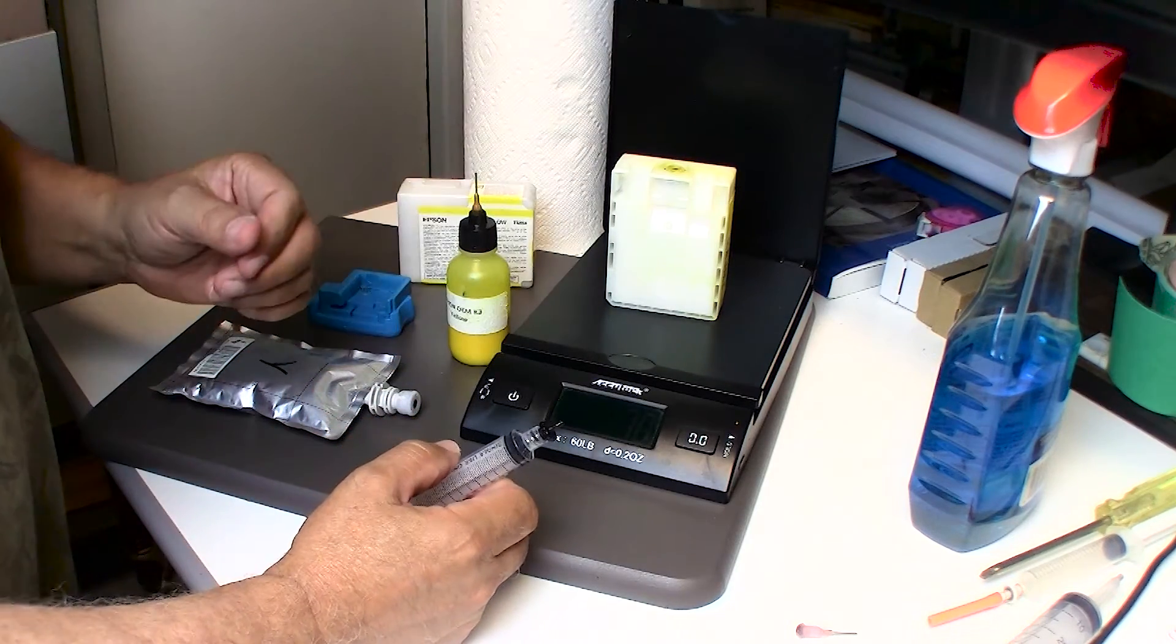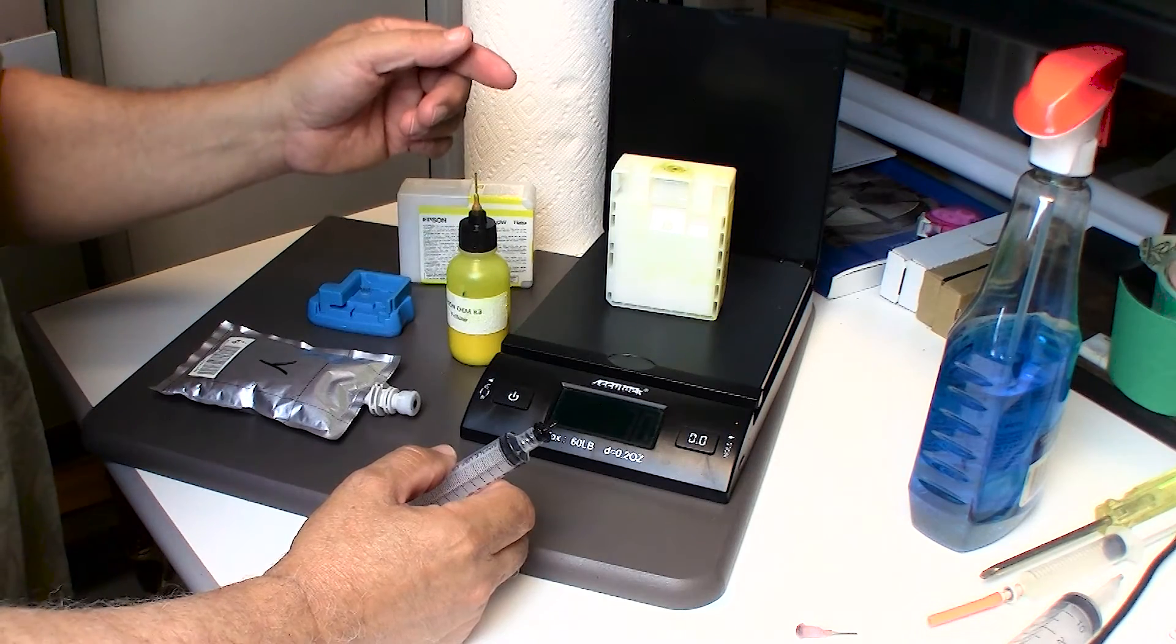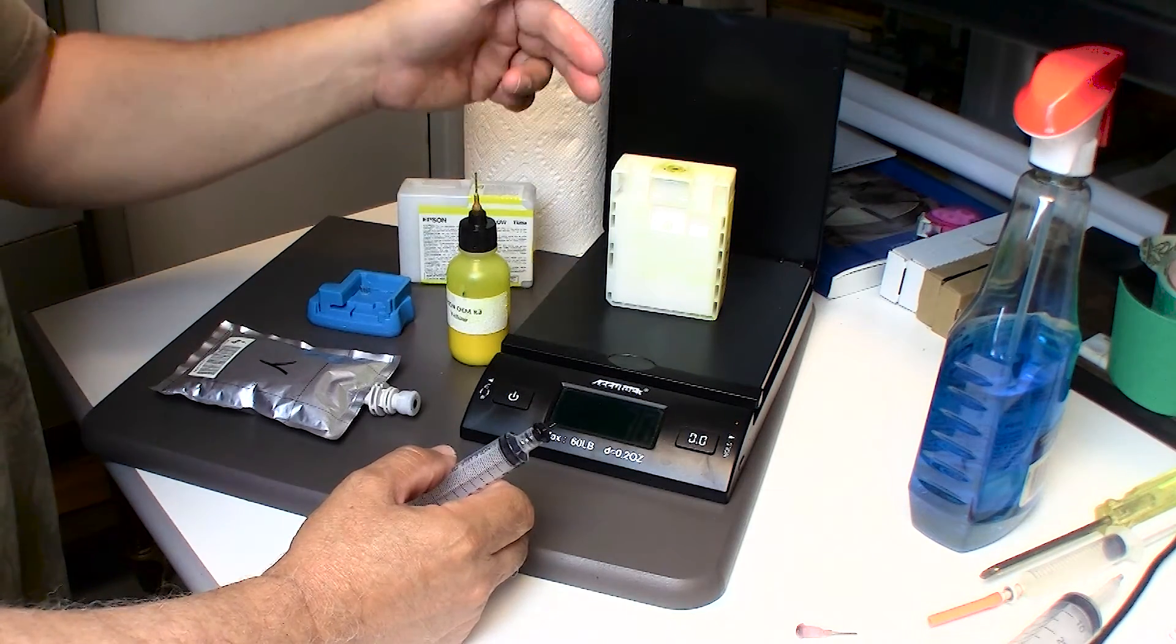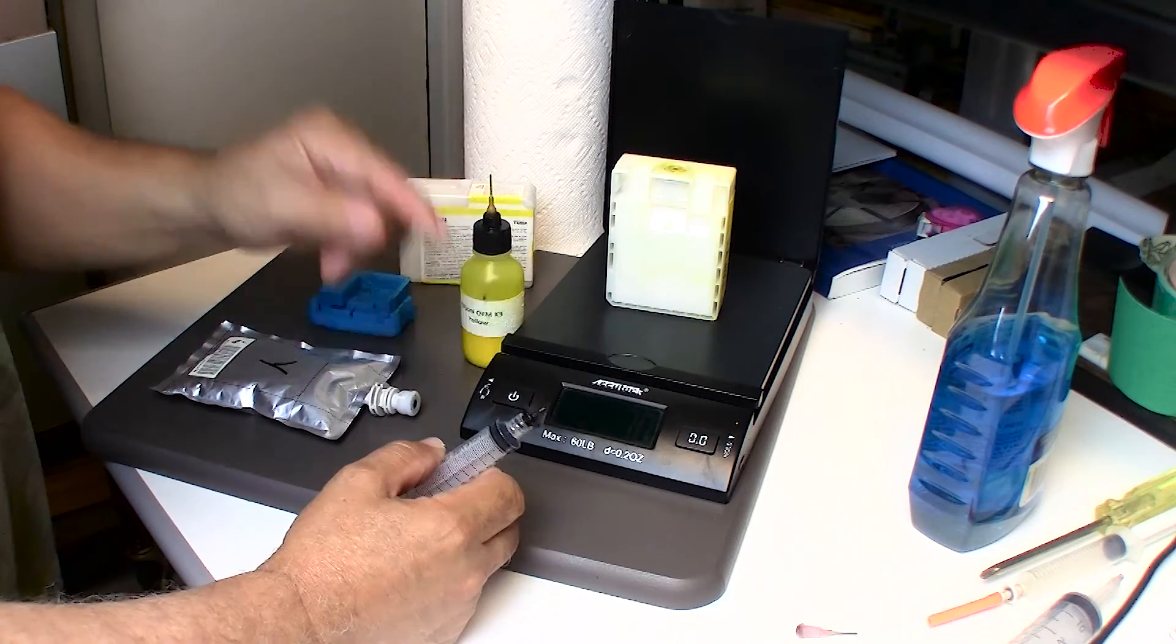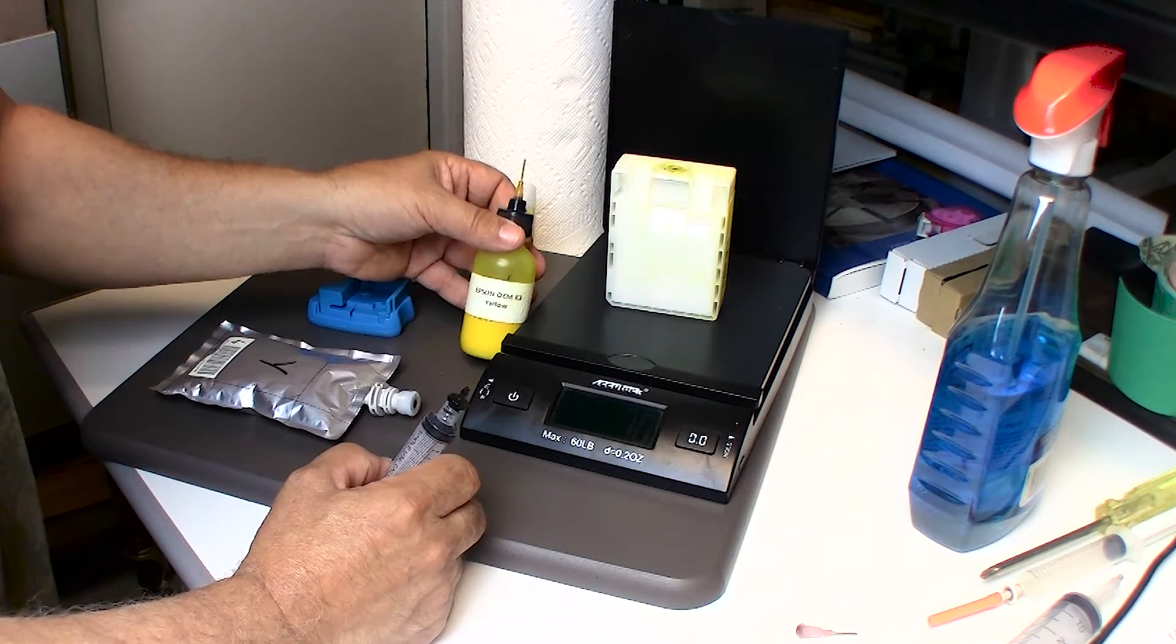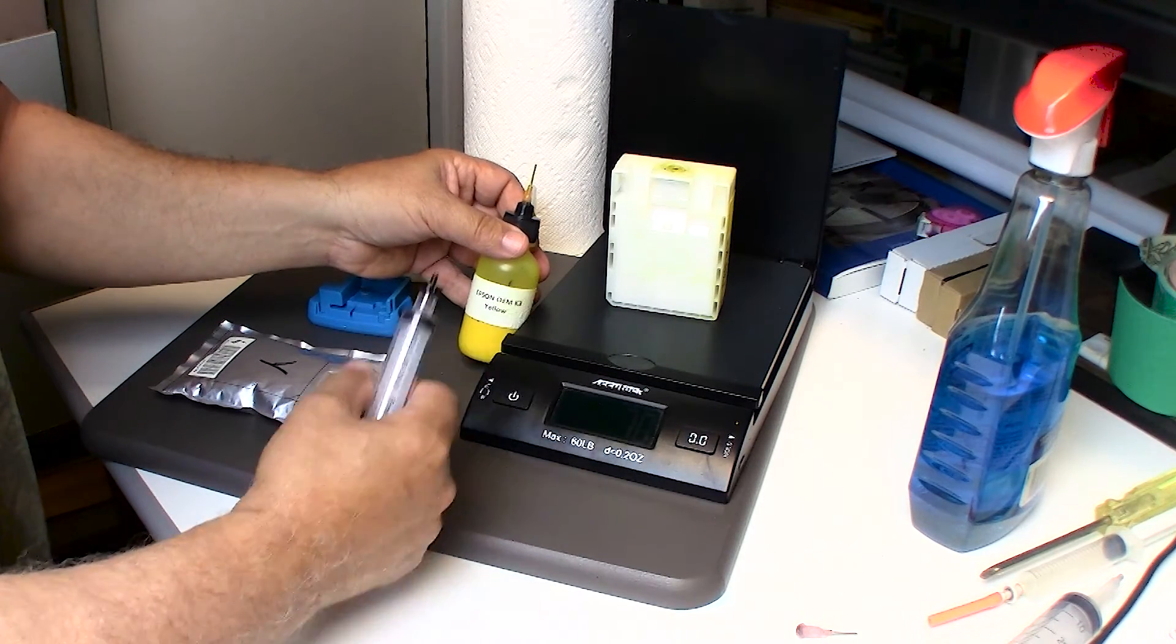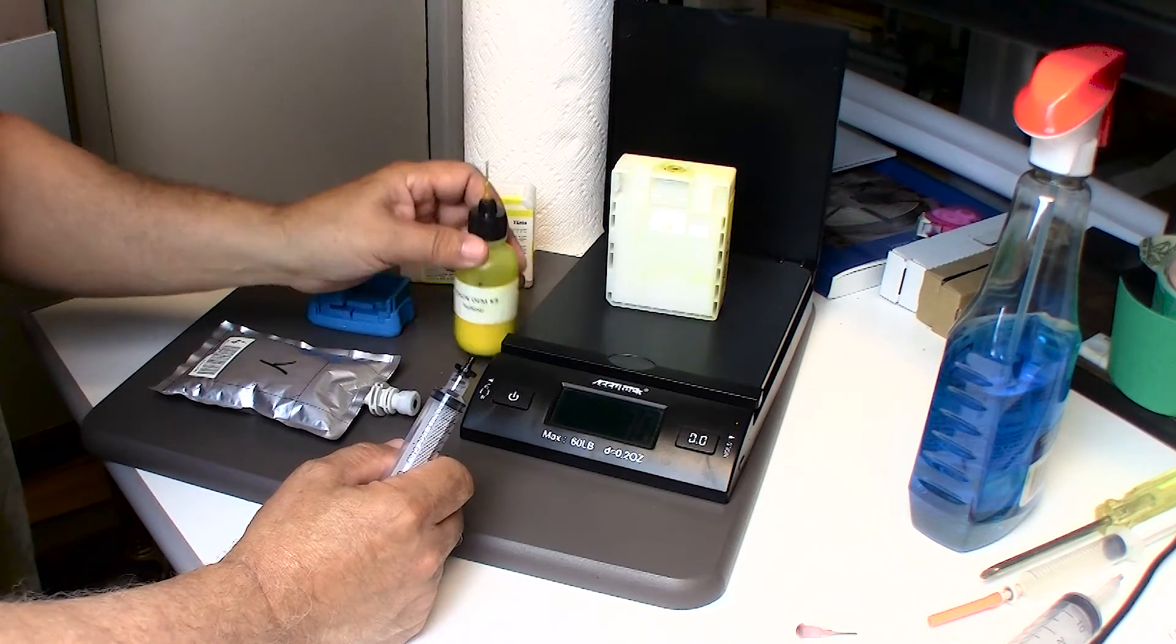I normally would attach my adapter to this bottle and just fill it. It can be a mess because you're not really measuring the amount of ink that you're injecting if you use this type of bottle. So I'd rather use a syringe. This is what I do for refilling my refillable carts for the 2400, 2880, and so on. I just pop the plug, inject the ink, pop the plug back in, and I'm done.